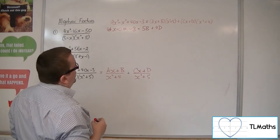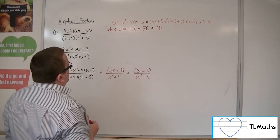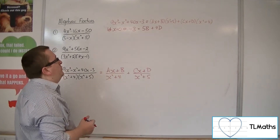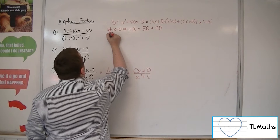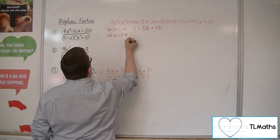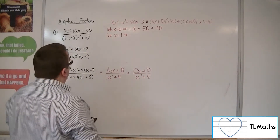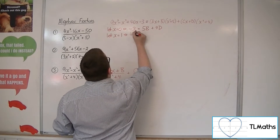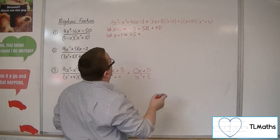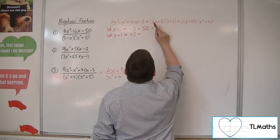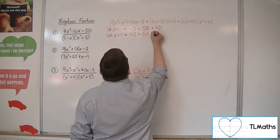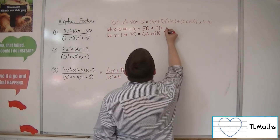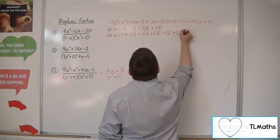Since we have four unknowns, we need four equations. Letting x equal 1: 9 minus 1 plus 40 minus 3 gives 45. The right-hand side gives (1 plus 5) times (a plus b), so 6a plus 6b, plus (1 plus 4) times (c plus d), so 5c plus 5d. That's equation 2: 45 equals 6a plus 6b plus 5c plus 5d.